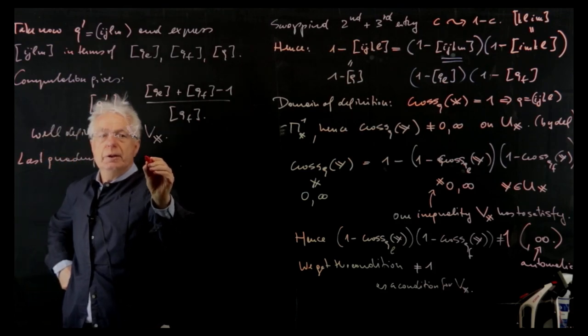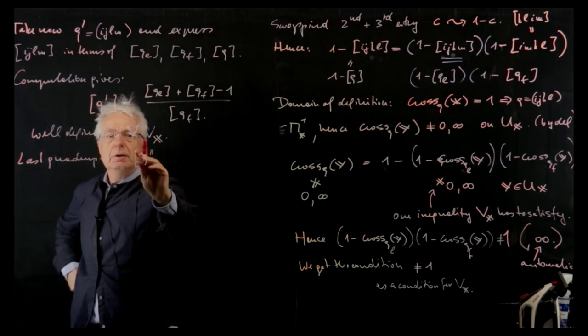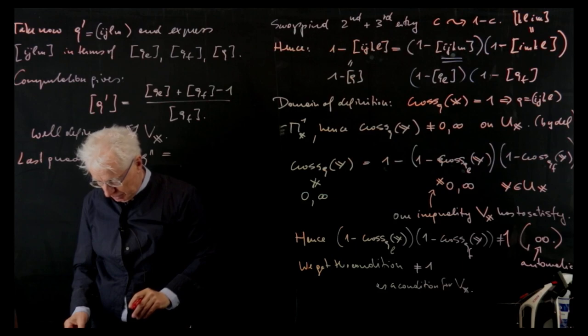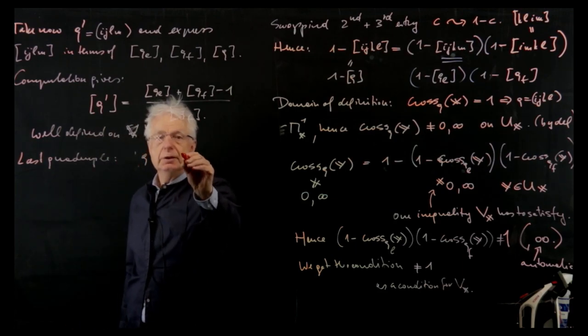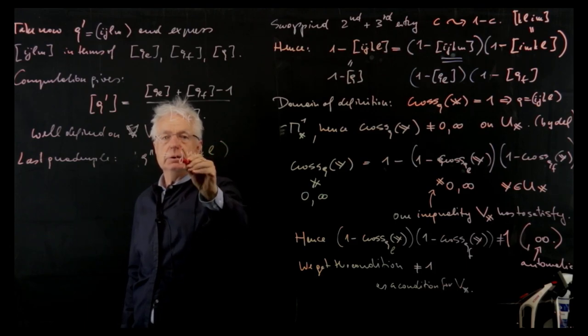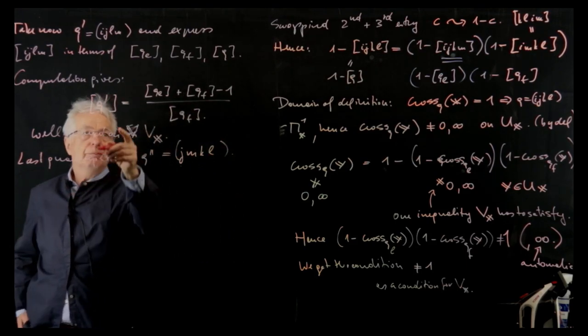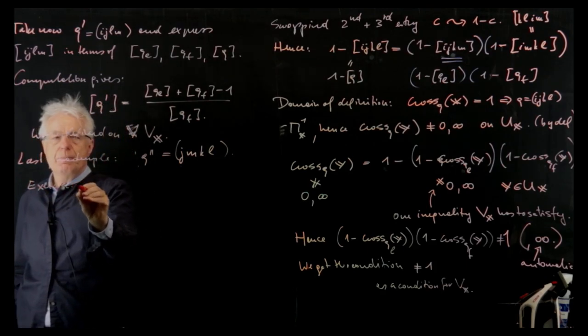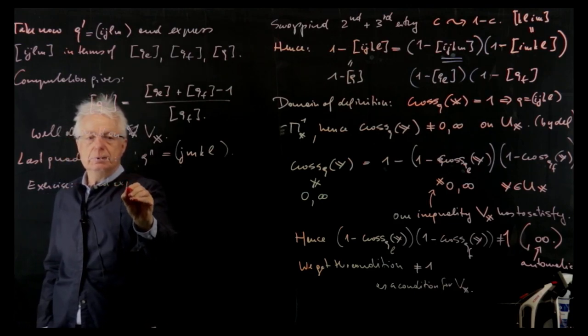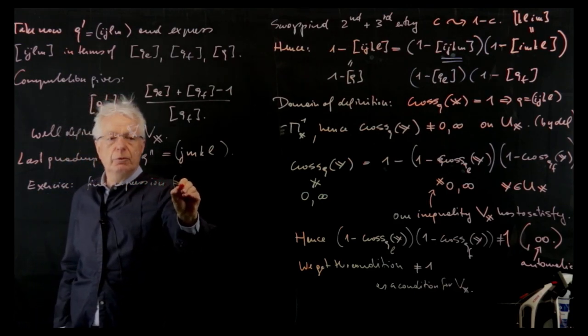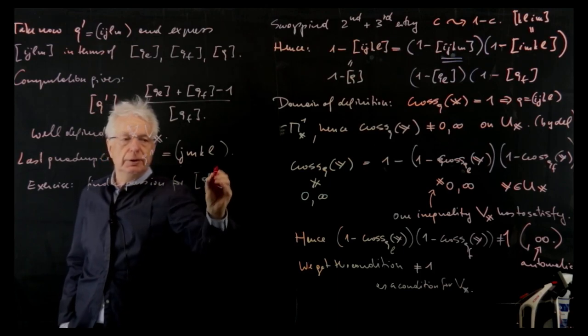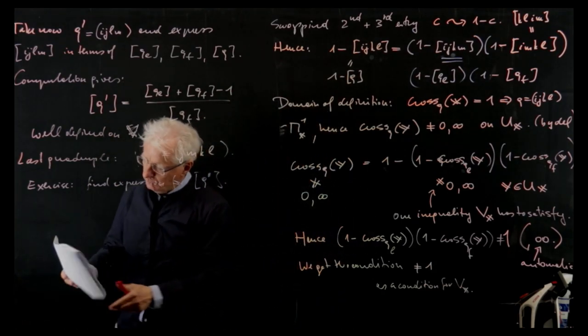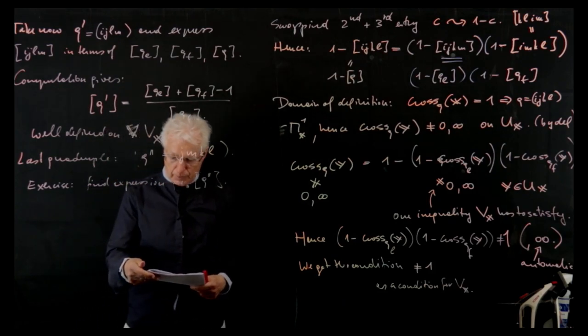And express cross ratio i, j, l, m and now we have more flexibility in terms of q e, q f. But we can also use q because q was already an expression. So this simplifies a little bit the formulas. And by computation. Yes, yes, I don't do it. I always make errors. I hope it is okay. So I already eliminate q itself and we get q prime cross ratio is cross ratio q e plus cross ratio q f minus 1 divided by q f. And this is well defined on v x which we have to show.